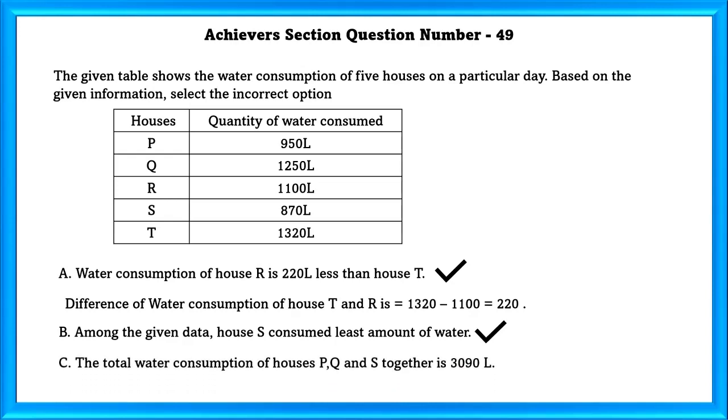C: The total water consumption of houses P, Q, and S together is 3090 liters. Now, let us check that. If we add that all up, we will get 3070, not 3090. This statement is wrong. And the incorrect option is C.